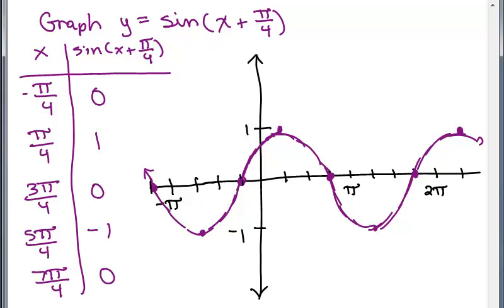I think I've graphed almost two cycles of this function. Now let's graph y equals sine of x in green for comparison. Remember: (0, 0), then (π/2, 1), then (π, 0), then (3π/2, -1), and (2π, 0), plus a few more ordered pairs.